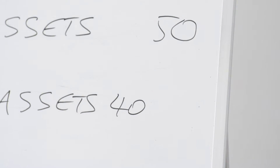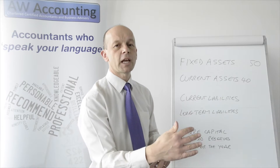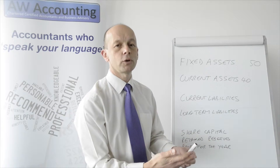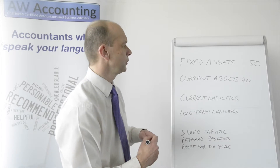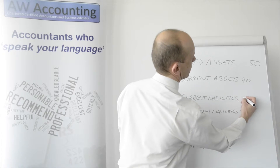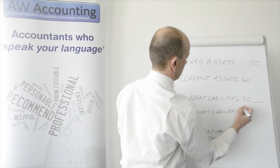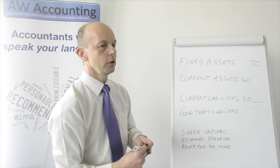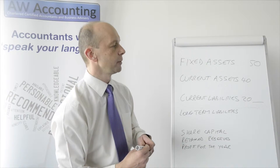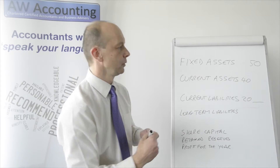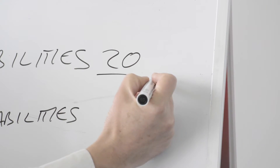Then current liabilities — so we've made the cash, we've turned the debtors and the stock and everything into cash, what are we going to pay out? That would include things like corporation tax, VAT, and if you've got a bank overdraft or bank loans. In our example we've got current liabilities of £20,000, giving us net current assets of £20,000 — that's the difference between the two.